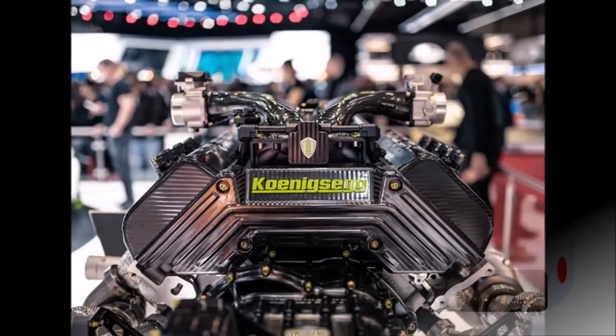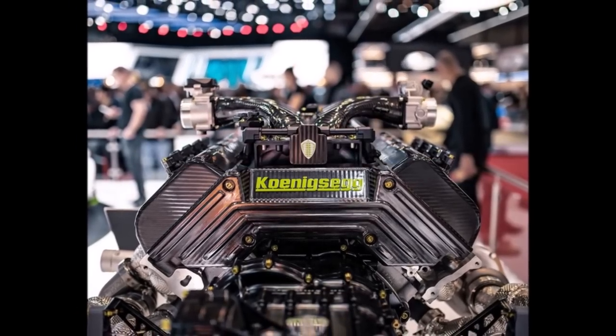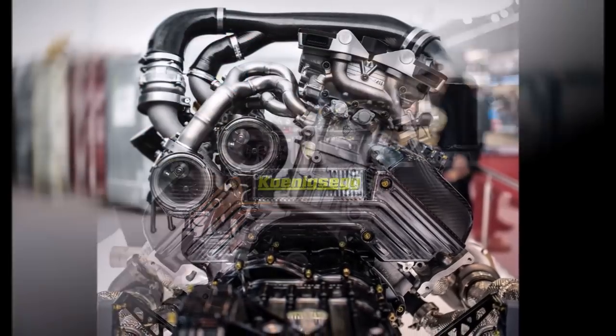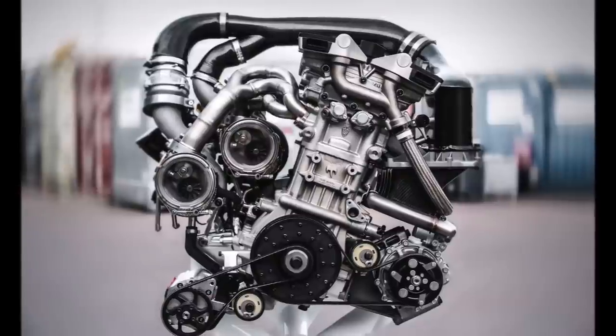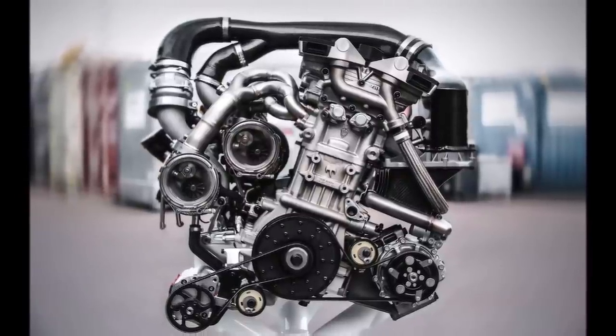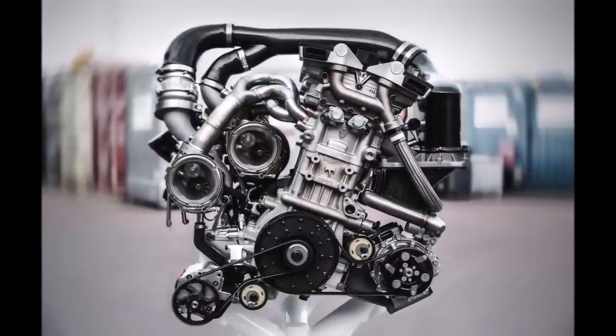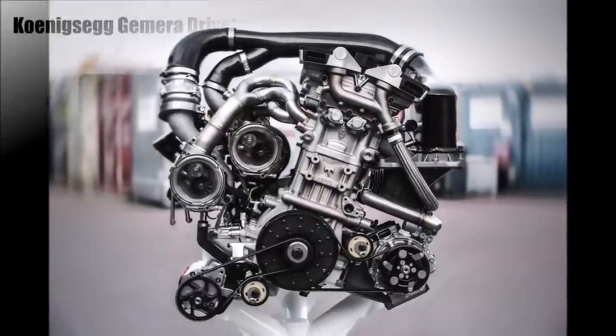So they took their well-known combustion system, tuned it to 300 horsepower per liter, and the result is a 600 horsepower 3-cylinder engine with two turbochargers and their 3-valve system, so this engine doesn't have camshafts.